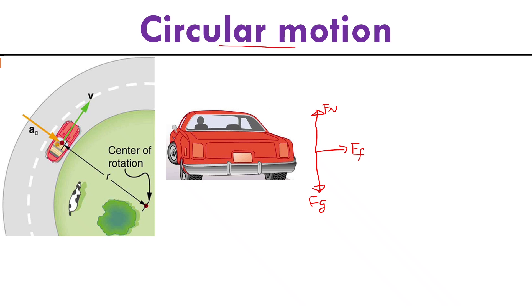But why, when people discuss circular motion, do they bring up centripetal force all the time? For a car experiencing uniform circular motion, the car moves in a circle but the speed does not change. At one moment the car is moving along one direction, at another moment along a different direction.